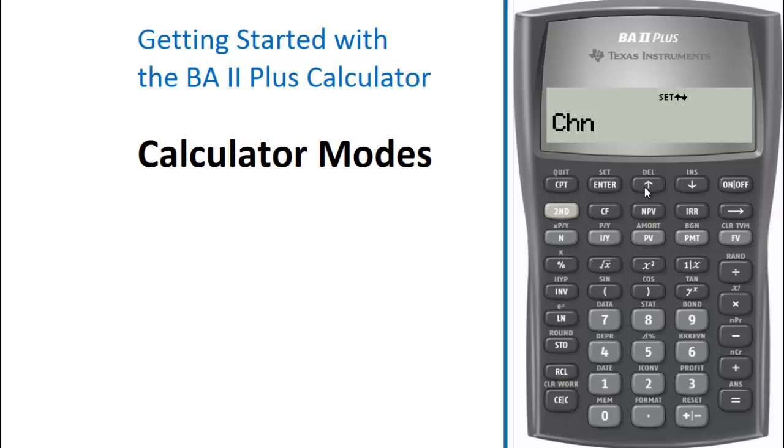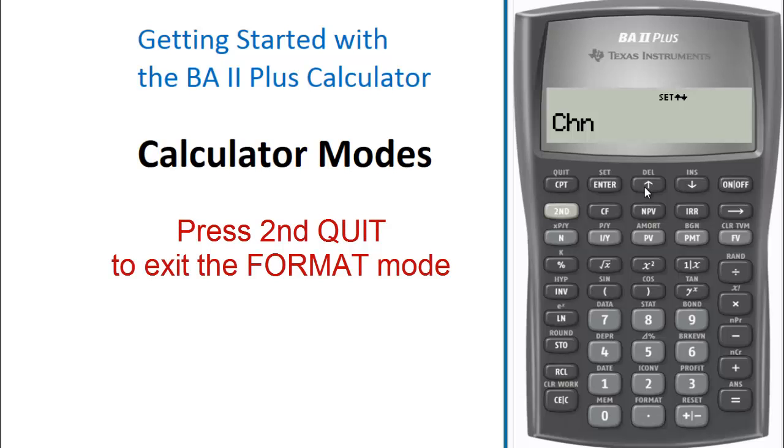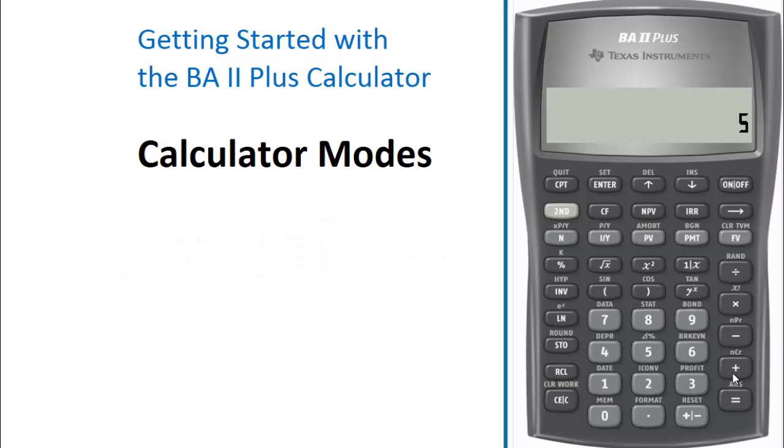In this mode, the calculator solves the problem in the order that you enter the operators. For example, when you enter 5 plus 4 times 2, the chain mode answer is 18, which obviously is incorrect.